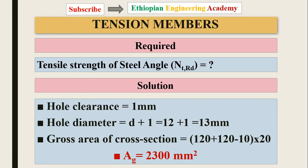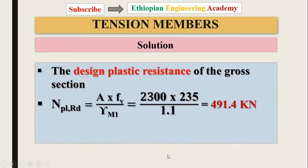The hole clearance is 1 millimeter and the hole diameter is 13 millimeters, which is below 40 millimeters. The gross area of the cross section is then calculated. For the angle section, when computing the gross area, we must deduct the value of thickness from the parameters. After deducting this value, the gross area is obtained.